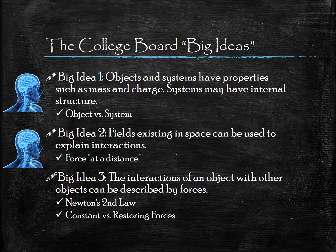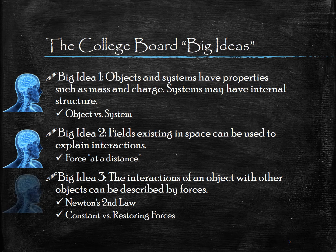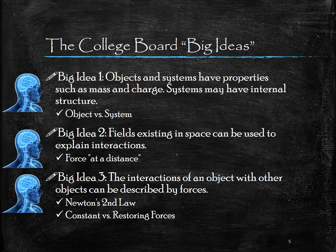The second big idea is that we use field theory to describe the universe. This will come up a lot, especially when we look at gravity and electricity, or how electric charges interact with each other. Any force that acts at a distance — any field force that can act through space without requiring contact — has an associated field that makes that force possible. The big fields we'll talk about are gravitational fields, electric fields, and magnetic fields. The third big idea is that interactions are always caused by forces between bodies. Any time an object interacts with another object, it's because there was some kind of force of interaction — sometimes a contact force, sometimes a field force. In fact, even contact forces are oftentimes the result of field forces, but we'll get into that later.